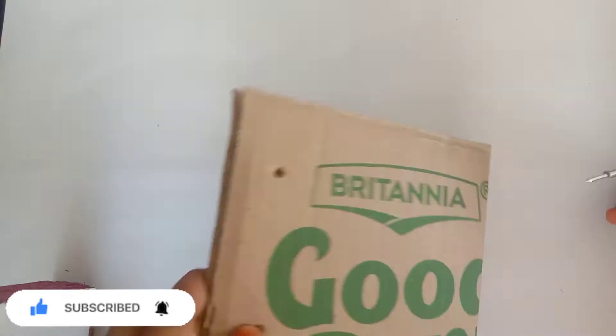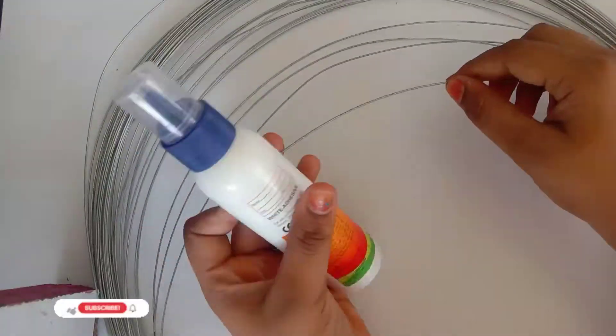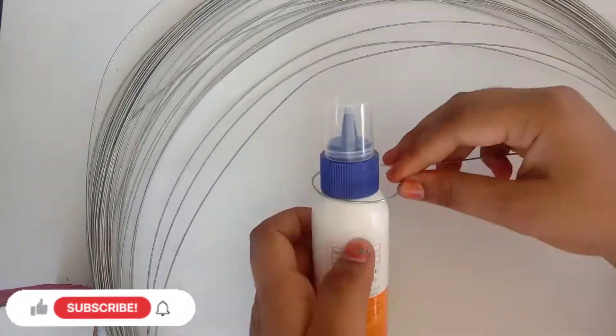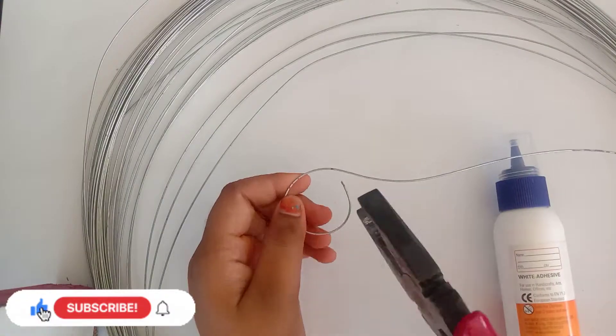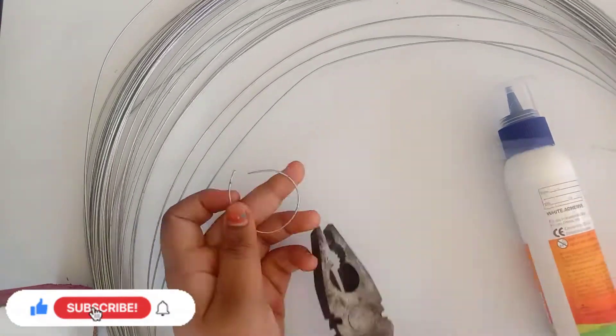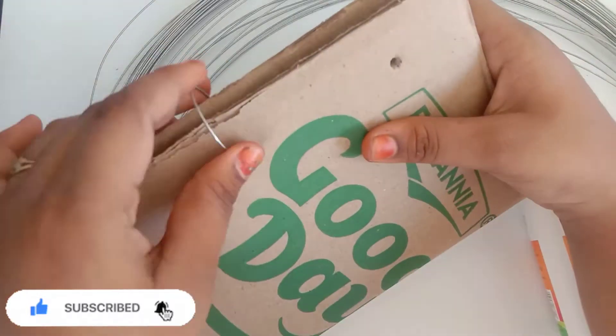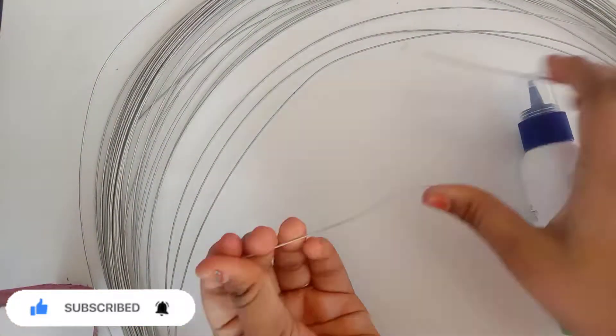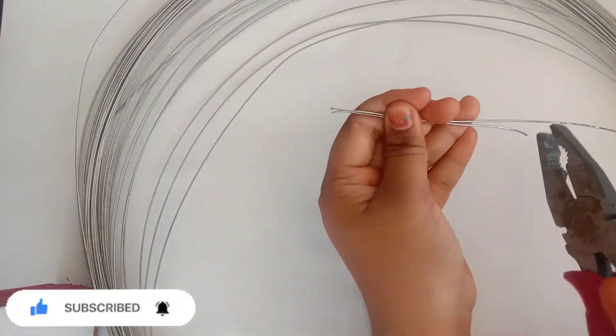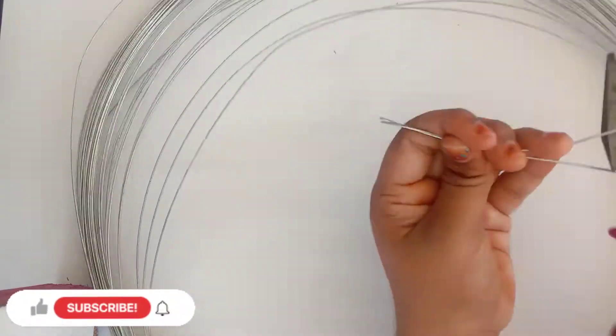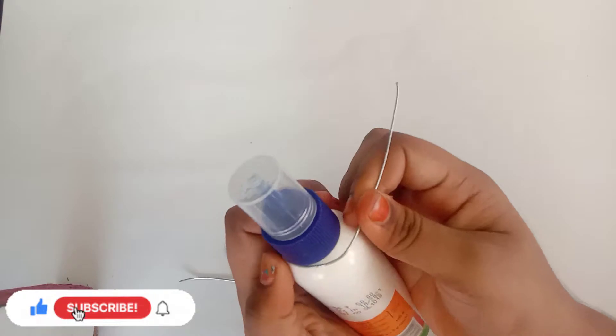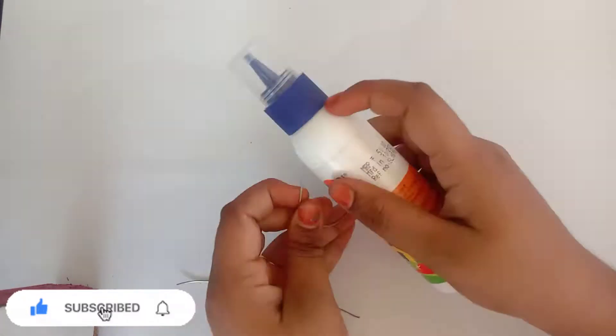We will place the calendar using a pencil. We will connect the calendar and wire. Here is a craft wire. If you don't have craft wire, we will place it in small depth.